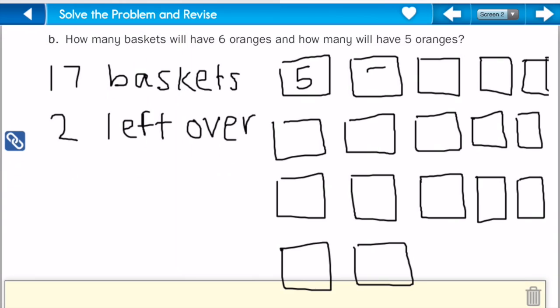So, 5, 10, 15, 20, 25, 30, 35, 40, 45, 50, 55, 60, 65, 70, 75, 80, 85. All right, so, I got all the way up to 85, but I know that I have 87 oranges.